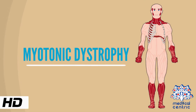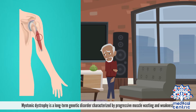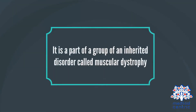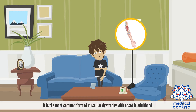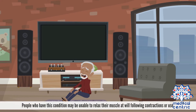Today's topic is myotonic dystrophy. Myotonic dystrophy is a long-term genetic disorder characterized by progressive muscle wasting and weakness. It is part of a group of inherited disorders called muscular dystrophy, and is the most common form of muscular dystrophy with onset in adulthood. People who have this condition may be unable to relax their muscles at will following contractions or use.